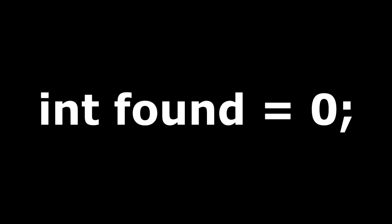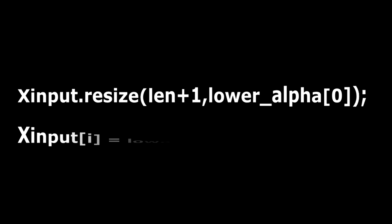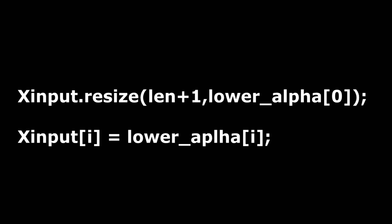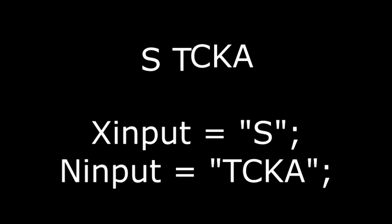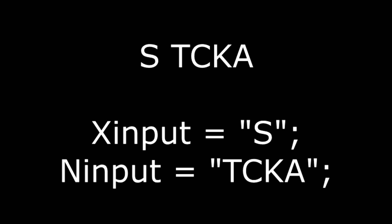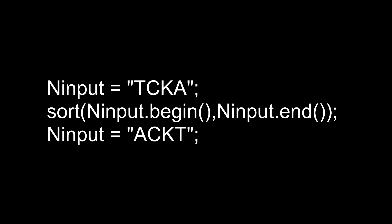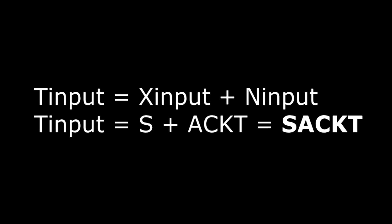We can solve this mistake as follows. First, declare an integer variable 'found' and initialize it with zero. Run a loop from i equals zero to i equals 25. Now add the i-th element of the global character array to the input. For example, if the spelling is 'stck', after adding 'a' at the end it will look like 'stcka'. Now separate the first character and the rest of the string — that is 's' and 'tcka' — and sort the string. After sorting it will look like 'ackt'.